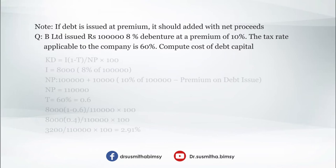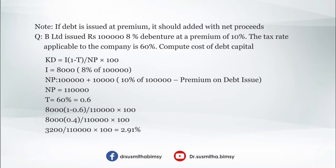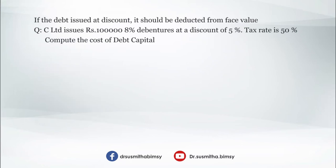Using Kd = I × (1 − t) / NP × 100: I = 8,000; NP = 1 lakh + 10% of 1 lakh = 1,00,000 + 10,000 = 1,10,000; t = 0.6. Substituting: 8,000 × (1 − 0.6) / 1,10,000 × 100 = 8,000 × 0.4 / 1,10,000 × 100 = 2.91%. If debt is issued at a discount, it should be deducted from the face value.